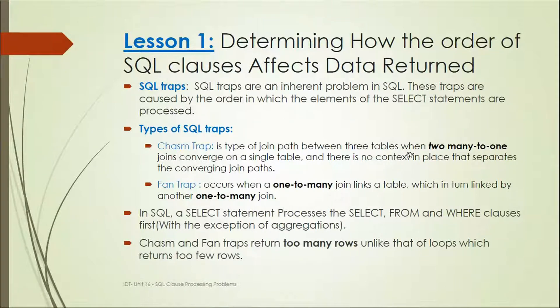Chasm trap is a type of join path between three tables when two many-to-one joins converge on a single table and there is no context in place that separates the converging join paths.